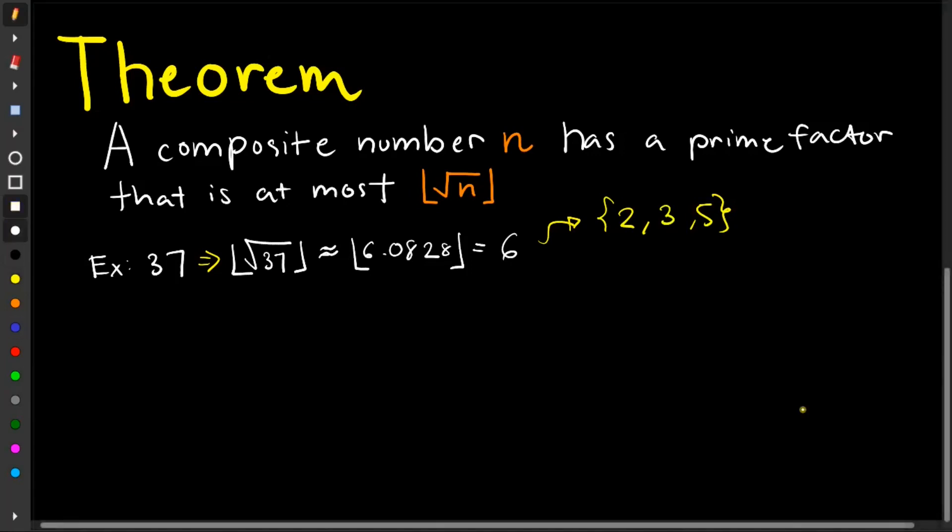Now observe that 37 is not divisible by 2, since it is not even. So this one, we cross that out. Now clearly it's also not divisible by 3, since 3 plus 7 is equal to 10, which is not divisible by 3. So it's not divisible by 3. And 5, clearly no, since it ends in 7, not 0 or 5. So it's also not divisible by 5. Which means that this number has no prime factors. This implies that this one is prime.